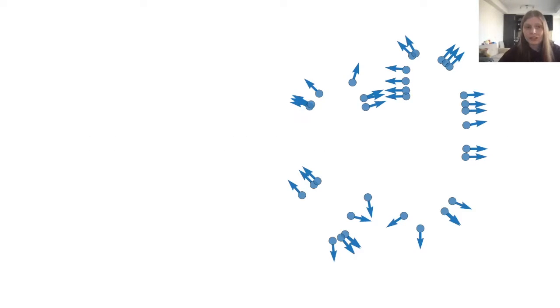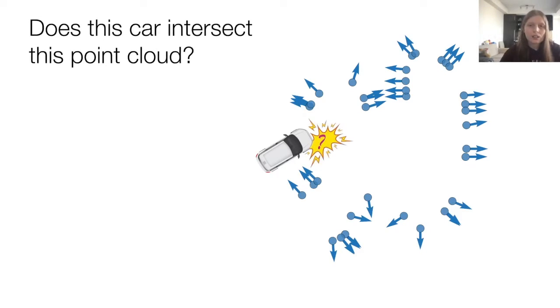Let's start with a simple question. Consider an oriented point cloud of a surface like this, and let's place an object like this car somewhere on the plane. The question is simple. Does this car intersect the surface described by this point cloud?